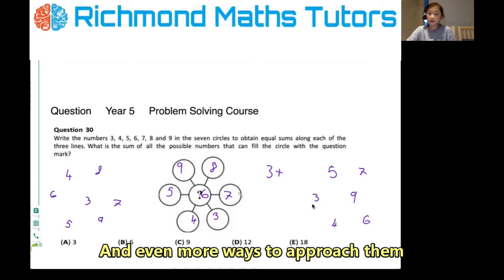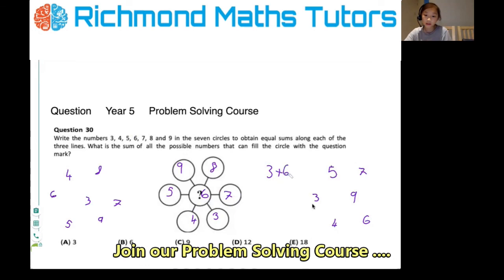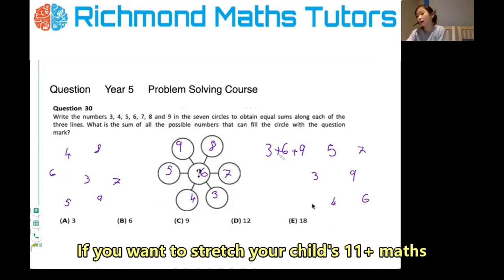Three plus six plus nine. So if we add those up, I'm just going to put this down a little so I can get to the answer. If we add them up, so nine plus nine, 18, it would be E.